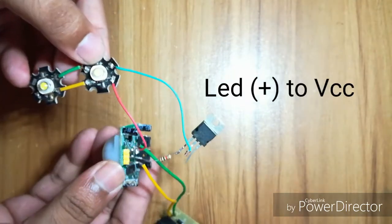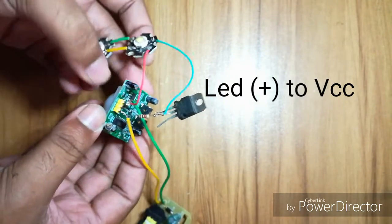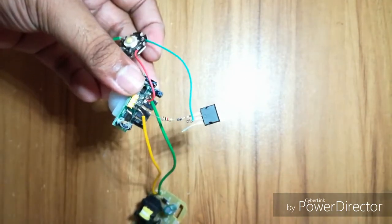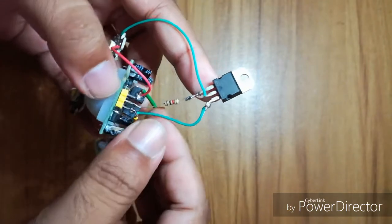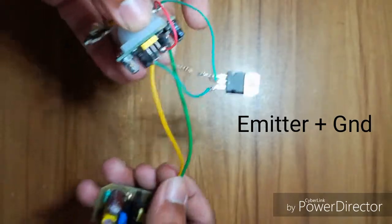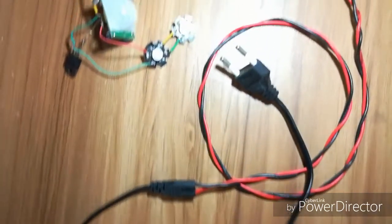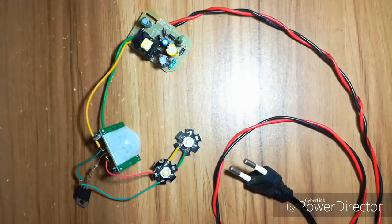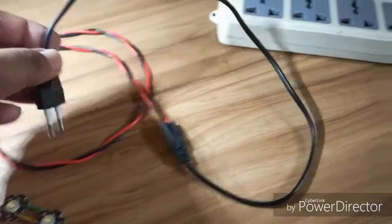Then I connected a wire to connect the emitter to the ground. It's now time to switch on the light.